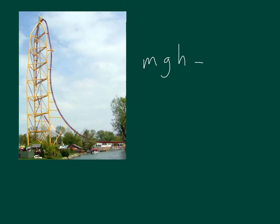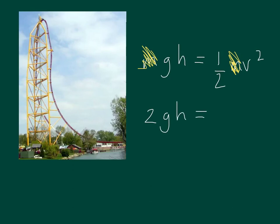Gravitational potential energy at the top is mgh, and kinetic energy at the bottom is one-half mv squared. We've got the same mass on either side, so we cancel them out again and rearrange for v. Multiplying both sides by 2 gives 2gh equals v squared, and taking the square root of both sides gives v equals the square root of 2gh.